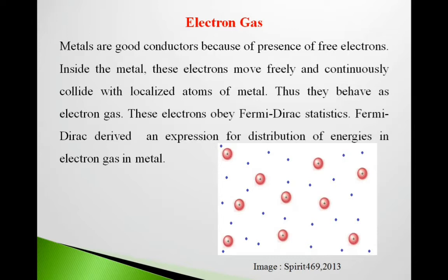Inside metal, electrons move freely and continuously collide with localized atoms of metal. See in this background, you can see these are atoms, localized atoms. And these blue dots are electrons, free electrons. They move freely in metal, and while moving they collide with these localized atoms.